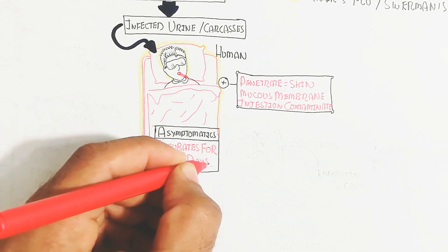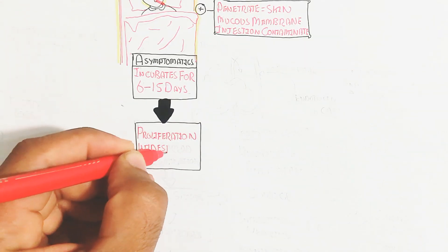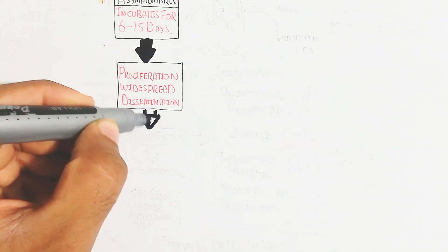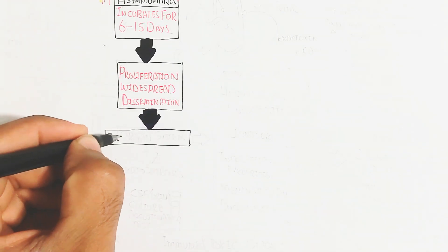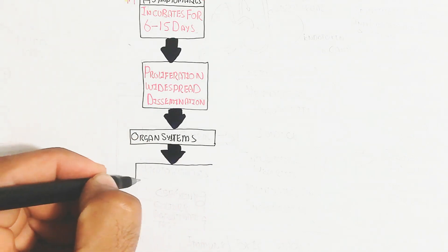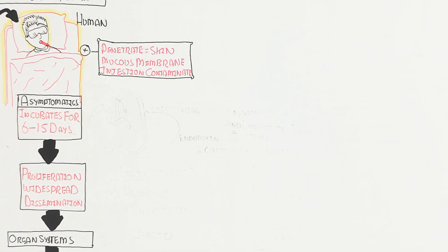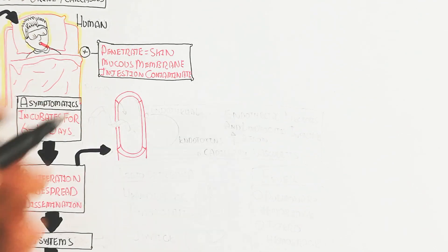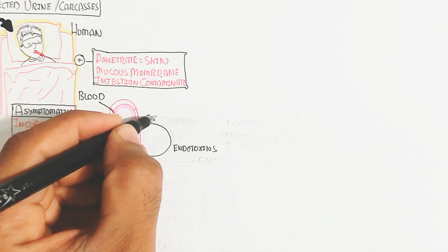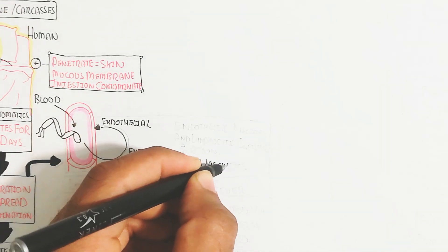Asymptomatic incubation lasts for six to fifteen days. After this incubation period, proliferation and wide-spread dissemination into the blood circulatory system occurs. After transmitting into the blood circulatory system, the bacteria target several organ systems. When the spirochete bacteria enter the blood, leptospiremia occurs.